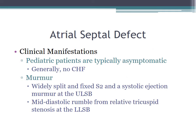Clinical manifestations of ASDs: pediatric patients are typically asymptomatic, which makes ASDs easy to miss in younger children. The classic murmur is the widely fixed split S2. There can also be a systolic ejection murmur at the upper left sternal border from relative pulmonary stenosis — a flow-related phenomenon — and a mid-diastolic rumble from relative tricuspid stenosis at the left lower sternal border, also flow-related.